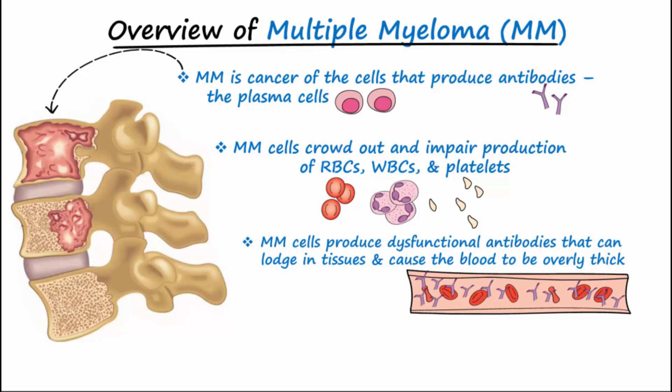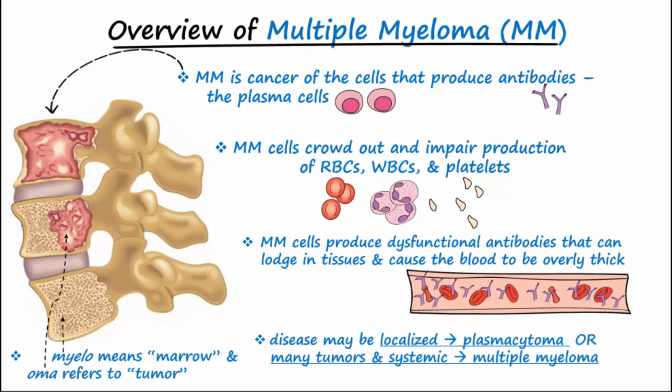In Greek, myelo means marrow and oma refers to tumor. The disease may be localized and called plasmacytoma, or may consist of many tumors and be systemic, called multiple myeloma.